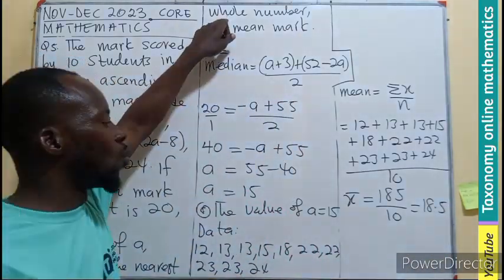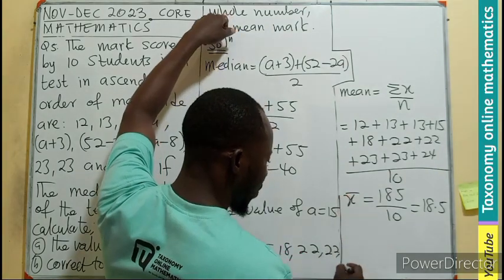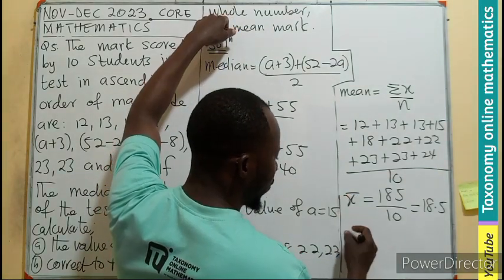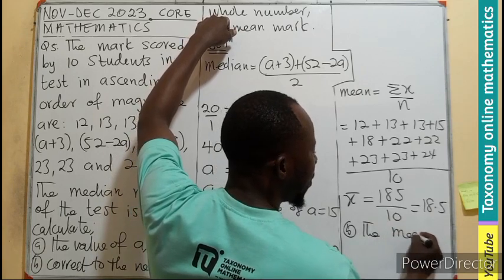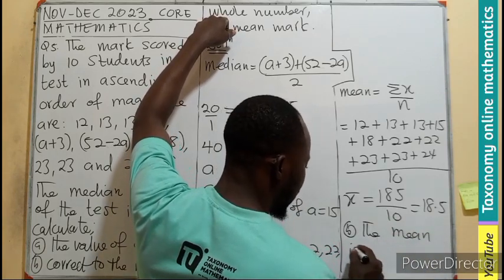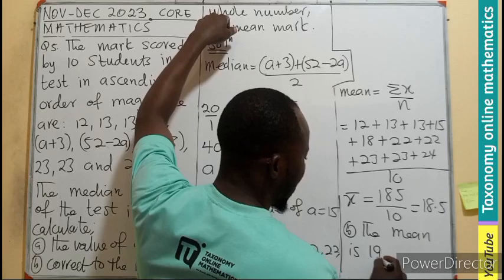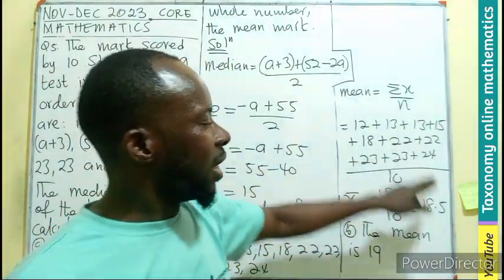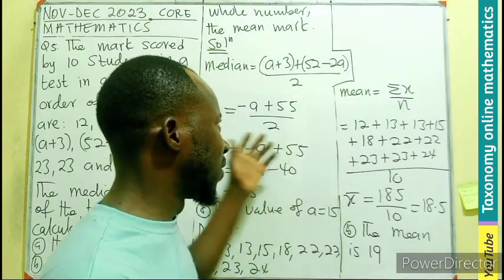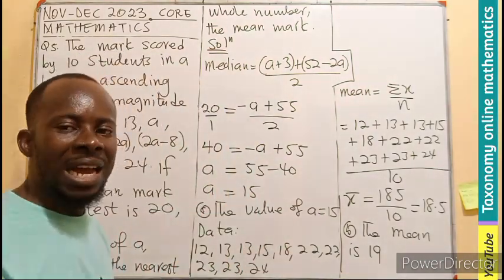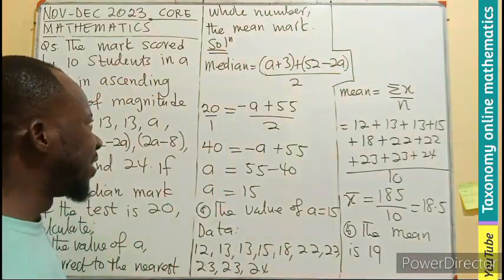But we have to write the nearest whole number. So therefore, for the B part, the mean is 19. If you approximate 18.5, it will give you 19. So this is the application we can get under Central Tendency.